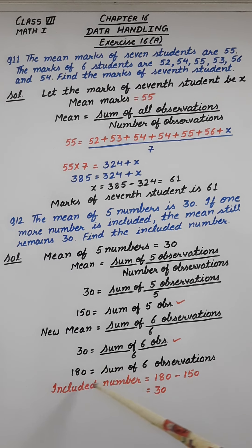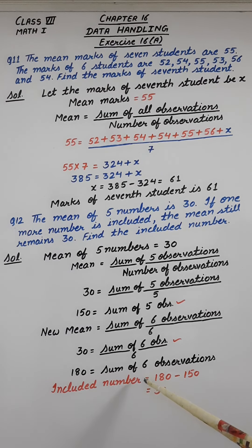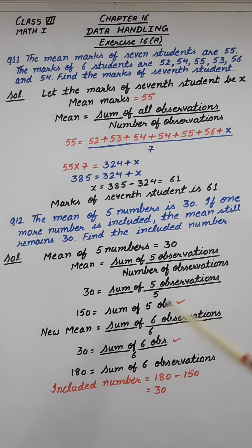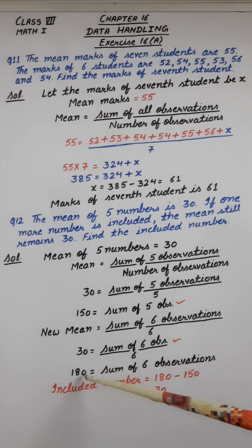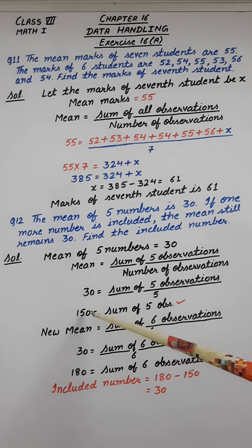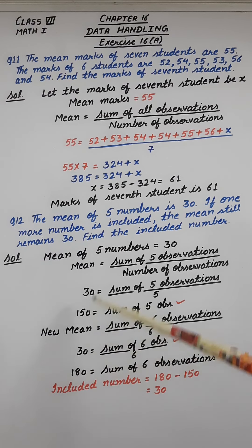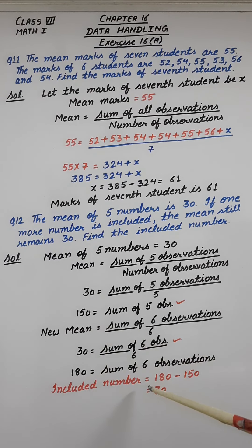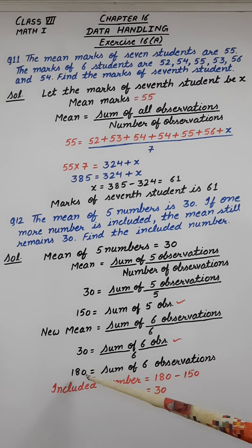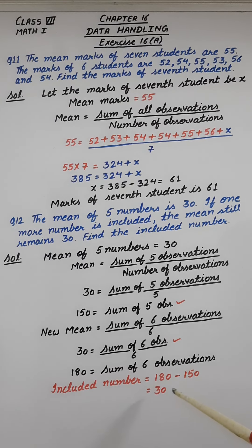Now we have to calculate the included number. Sum of 5 observations is 150 and sum of 6 observations is 180. To calculate the included number, we subtract these two: 180 minus 150, and the result is 30. So 30 is the included number.